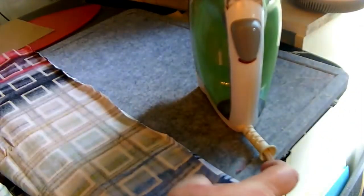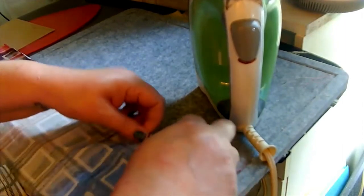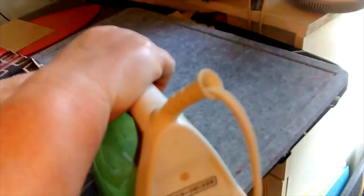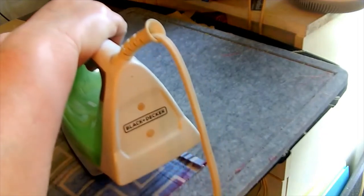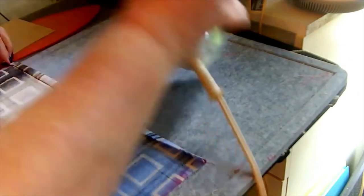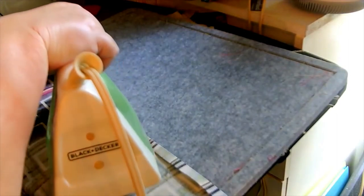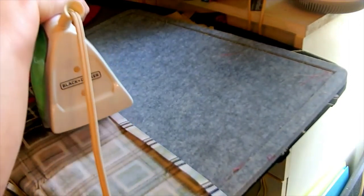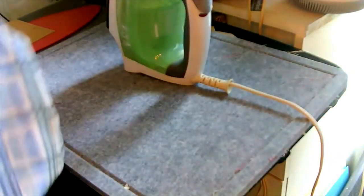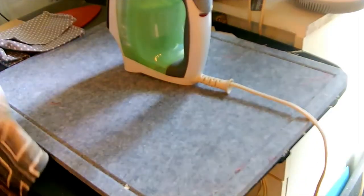Once I've got it ironed all the way down, I'll just fold it over one more time because I don't want fraying edges on my towel. And go right down through here and iron down a second quarter inch. I'm going to take this over to my sewing machine and I'll sew down both sides and then I'll come back and show you how to do the bottom.